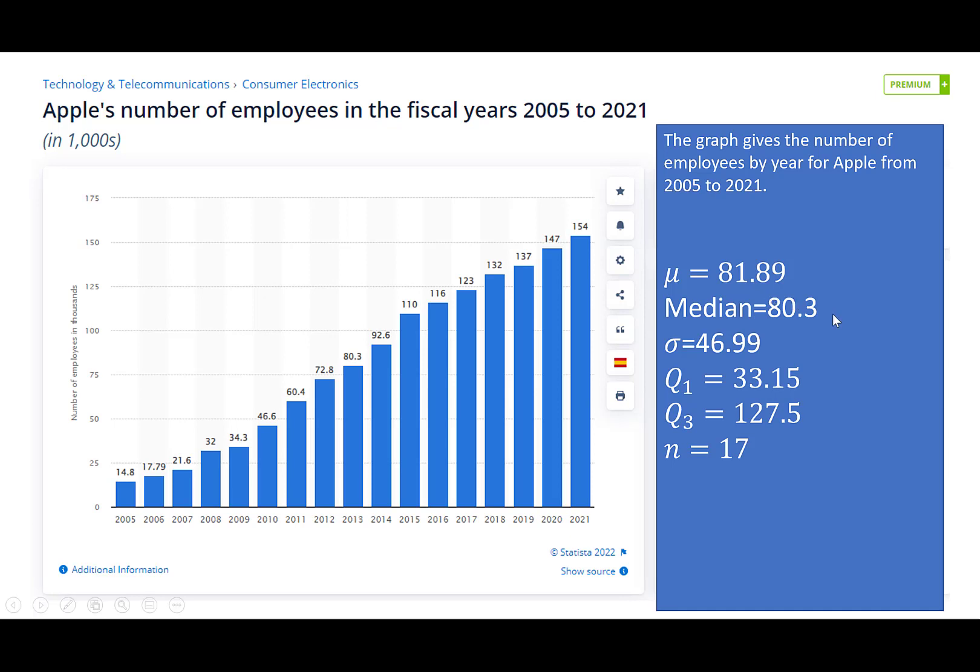I found the median was 80.3, pretty close. The standard deviation to say how far out is it spread is 46.99. You can see this has been growing over time. The first quartile is 33.15. So what does that say? The first quartile being 33.15 says that 25% of the years, Apple had less than 33.15 thousand employees. Quartile three being 127.5 says 25% of the time Apple has had more than 127.5 thousand employees.